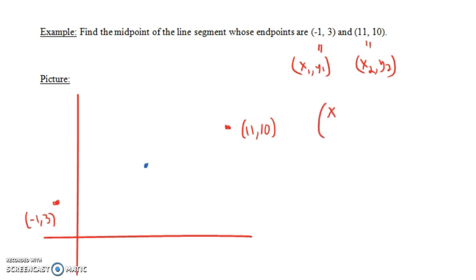So the midpoint formula says (x1 + x2)/2 is the x-coordinate, and (y1 + y2)/2 is the y-coordinate.